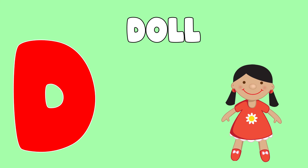E is for elephant. E, elephant. F is for frog. F, frog. G is for goat. G, goat. H is for hand. H, hand.